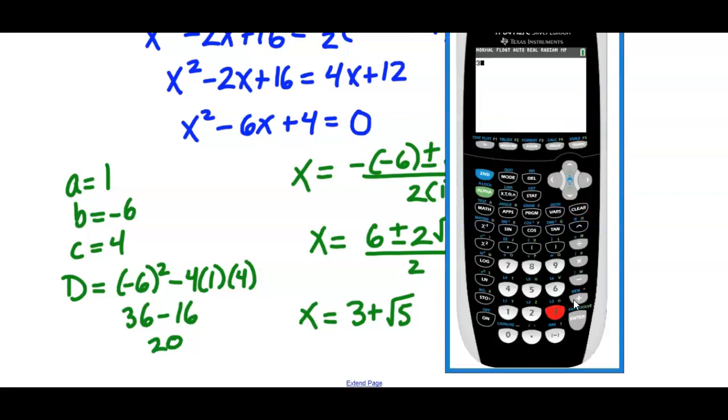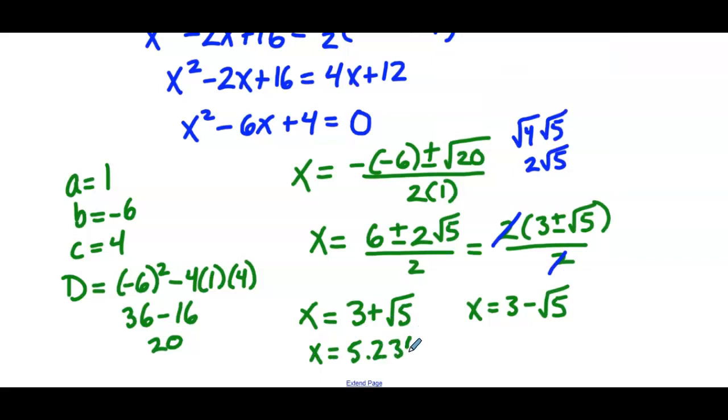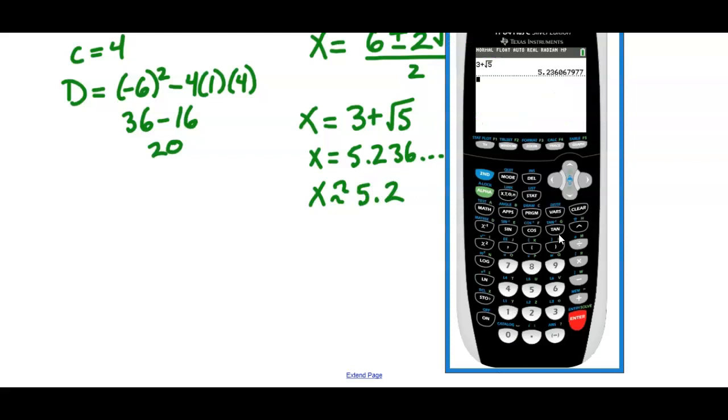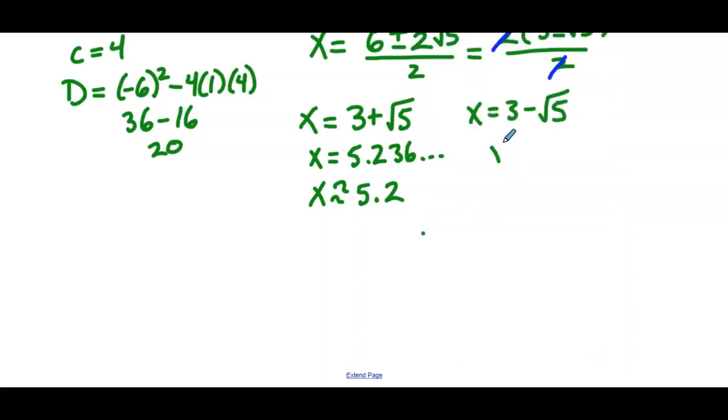So going to the calculator, we have 3 plus, we'll hit second, x squared, which gives me the square root of 5. So that's 5.236. So x equals 5.236 and some more decimals. So rounded to the nearest tenth, x is approximately 5.2. And then 3 minus the square root of 5 is 0.7639. So x is 0.7639 and more decimals. Let's just confirm. 7, 6, 3, 9. Good. So rounded to the nearest tenth, x is approximately 0.8.